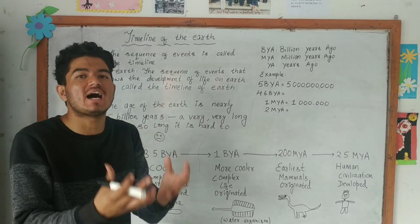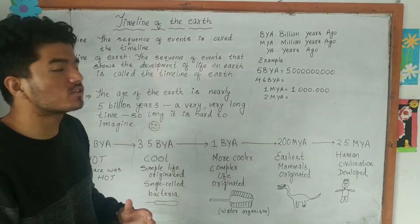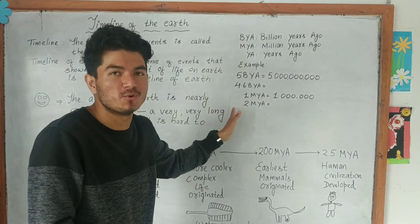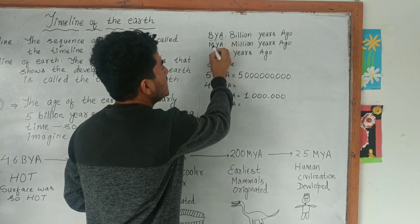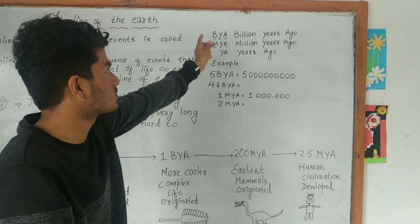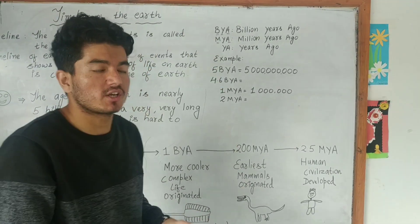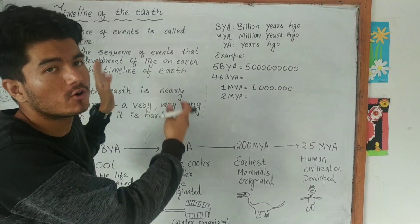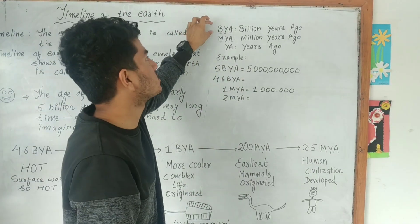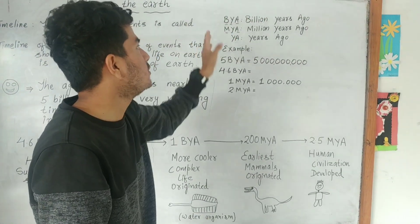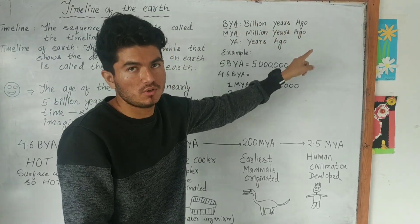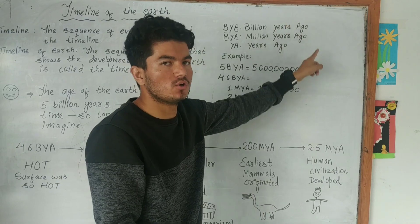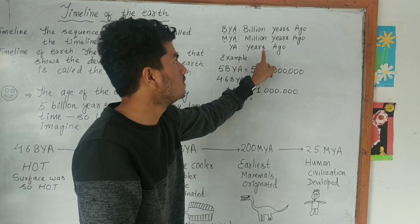First, let us understand some concepts and the terms written on the board. We need to know the meaning of BYA, MYA, YA, and so on, because these are very common and frequent terms we will be using while studying the timeline of the Earth. BYA is the acronym for Billion Years Ago. MYA stands for Million Years Ago. YA stands for Years Ago.